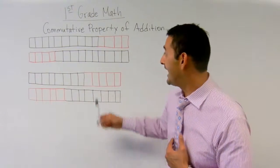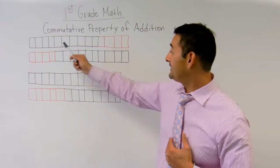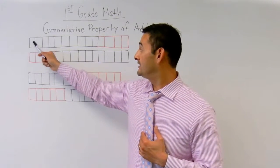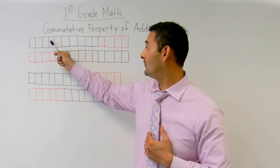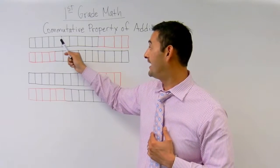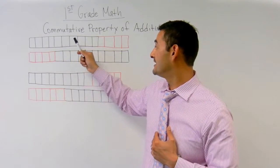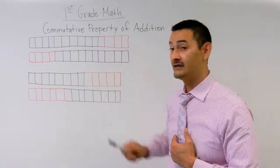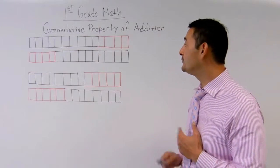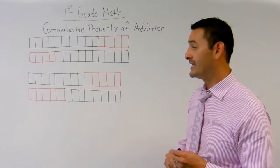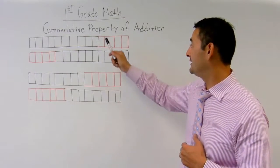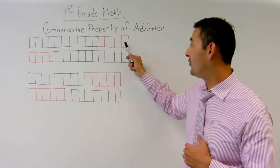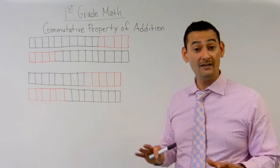Okay, so here we have — how many black boxes do we have? One, two, three, four, five, six, seven, eight, nine, ten. Wonderful. How many red boxes do we have? Let's go ahead and count them together. Ready? One, two, three, four. Awesome.